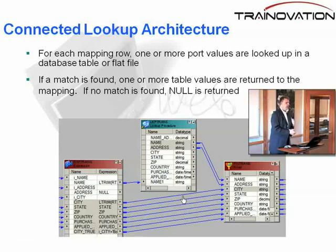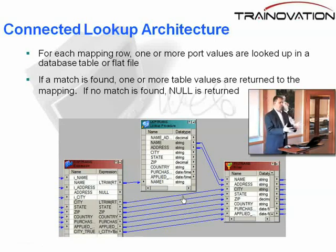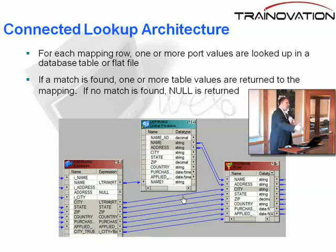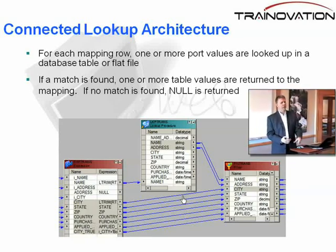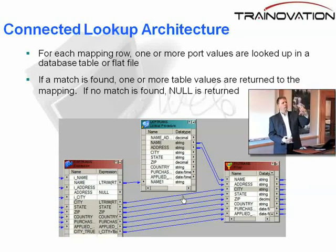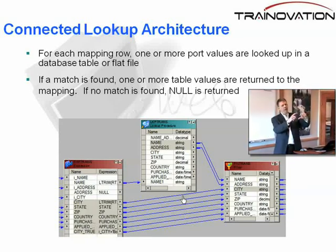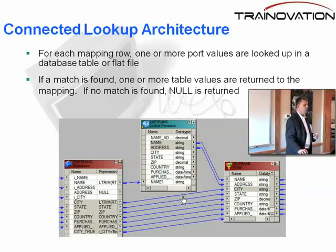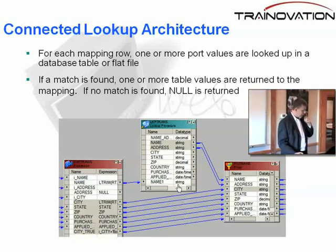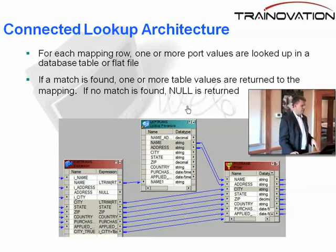If a match is found — if it looks up the data — you can actually pass more than one field downstream. So it goes into the cache, finds a match, it can pull a whole row of data, match it, and push it downstream. This is the way that the lookup architecture works.